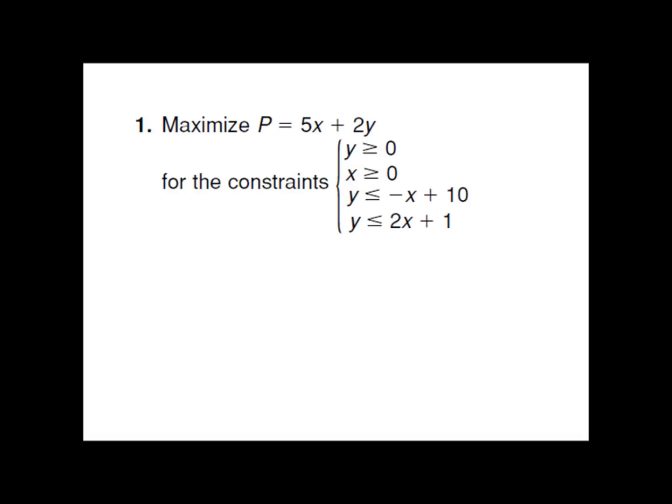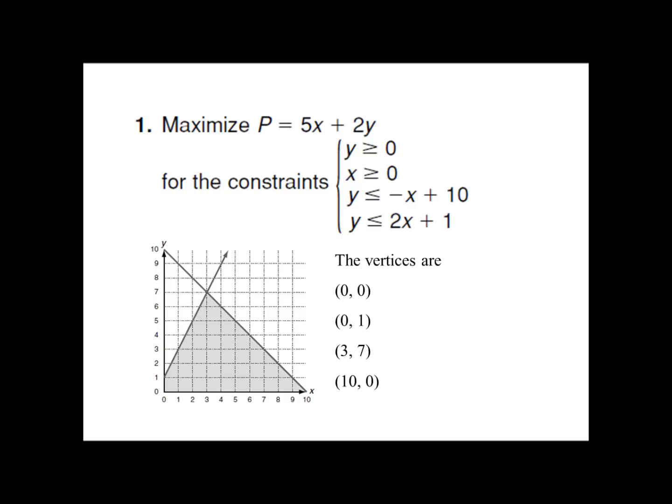In this example they want us to maximize p equals 5x plus 2y. Whatever we're trying to maximize or minimize, that is our objective function — our objective is to maximize this. They're giving us our constraints, so this really shouldn't be that difficult. We just went over how to graph these inequalities together. Y is greater than 0, meaning we're staying above the x-axis. X is greater than 0 means we're staying to the right of the y-axis.